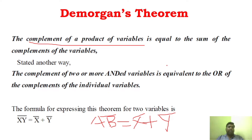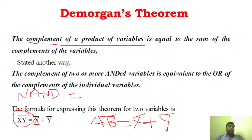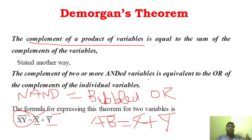Now we will show the proof of it. From this expression you can see that this particular expression can be called as NAND operation — that is AND followed by a NOT gate. So it is a NAND operation that is equal to the individual complements. So this is the OR function, and you have a NOT function on each input. So what we can say is we can say this is a bubbled OR. So NAND is equal to bubbled OR.